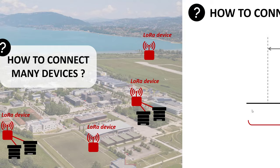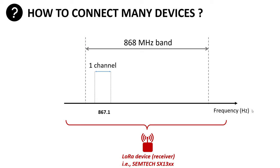In the first application, I had only one device working on one channel. The first idea to connect many devices is to multiply the number of channels used — say, eight channels. With eight channels, eight devices can transmit simultaneously, each on its own channel. The only condition is that the receiver, which originally received on one channel, must now receive on all channels at the same time — so it's a more complicated receiver.